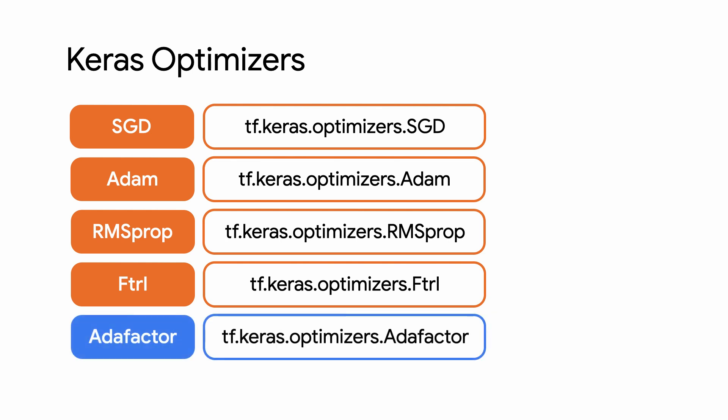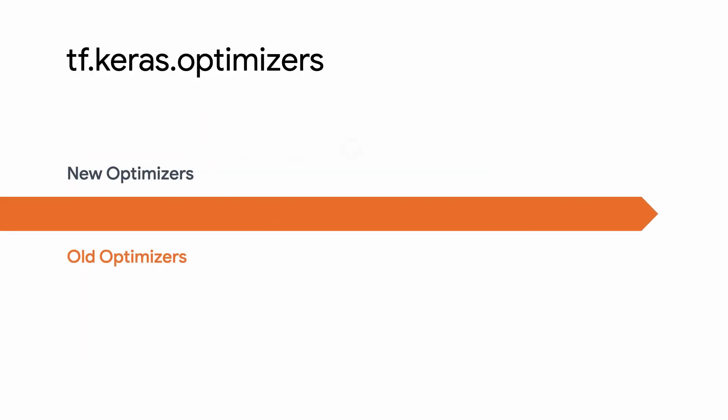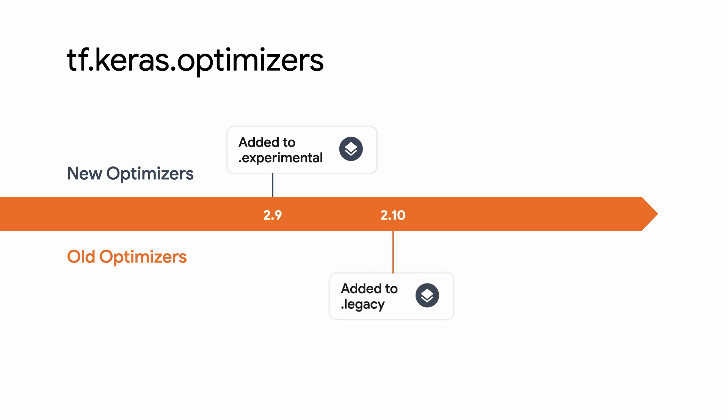You might find Adafactor used in NLP or large language models. It uses less memory as it only saves partial information from previous gradients. To recap the migration: in 2.9, we added new optimizers into the experimental namespace; in 2.10, we added the existing optimizers into the legacy namespace; and now in 2.11, we have turned the new optimizers on by default for everyone. You can find more info on the new optimizers in the video description and check out the release notes for more info on how to migrate. Let us know how you go in the comments or file bugs on GitHub.